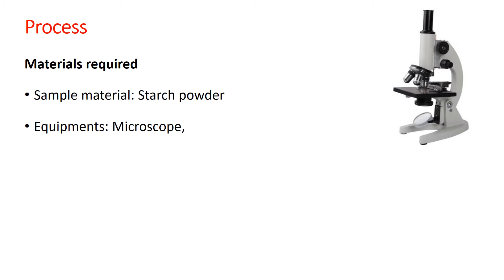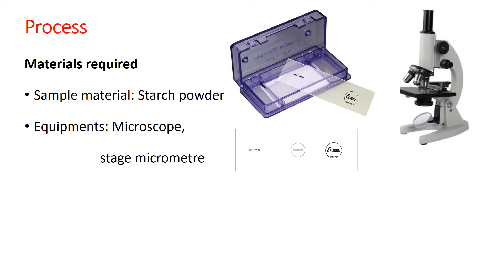Now, how to proceed for this experiment. The first thing is the materials required. Normally we require a sample material — such as starch, a prepared formulation, or calcium oxalate crystals — whichever sample you choose. The major equipment required is a microscope, then a stage micrometer. A stage micrometer is a simple slide with a circle at the center that has been etched with a microscopic scale.